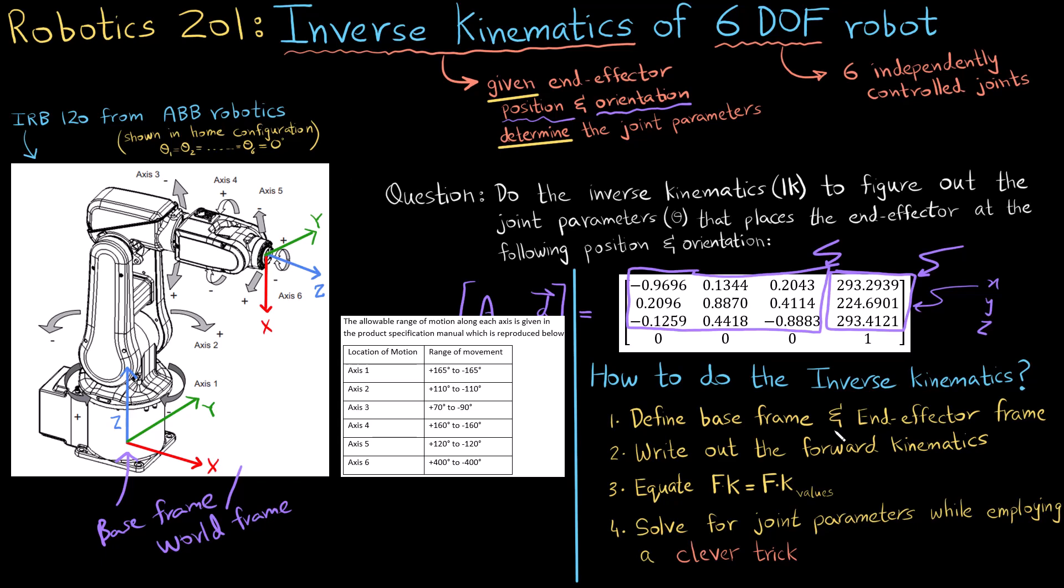Thirdly we equate the forward kinematics to the forward kinematics values which is this matrix right here. So we write the forward kinematics ourselves and we equate it to this homogeneous transform and then we solve it for the joint parameters by employing a few clever tricks.